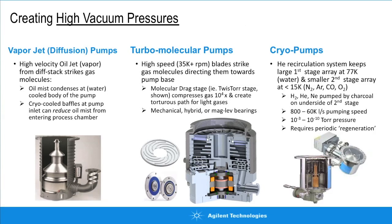Cryopumps use very cold surfaces to capture molecules — there's no exhaust connected. Molecules in molecular flow find their way into the pump body and land on cold surfaces, losing so much energy they can't leave. 77 Kelvin (about -200°C) is very effective at pumping water. A second stage assembly below 15 Kelvin pumps argon, nitrogen, carbon monoxide, and other gases. The downside is that cryopumps only trap molecules and must be periodically regenerated, with regeneration frequency dependent on the gas load.